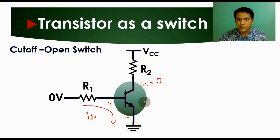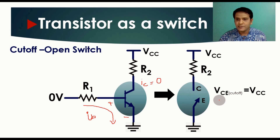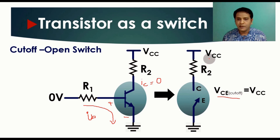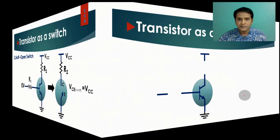If you draw the equivalent circuit for cutoff region or open switch mode, since IB equals zero, the emitter junction is also open, so there is no current flow from collector to emitter. At that point, your collector to emitter voltage, VCE cutoff, equals VCC. That is how a transistor works in cutoff mode — it acts like an open switch.